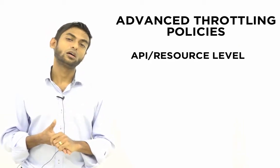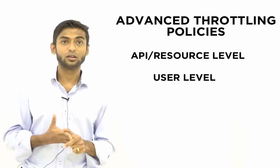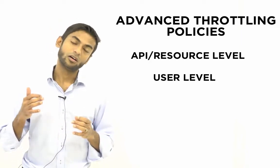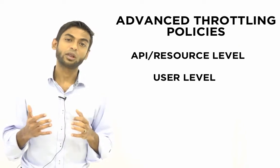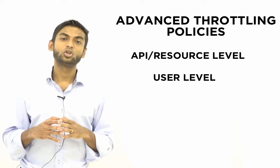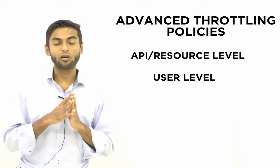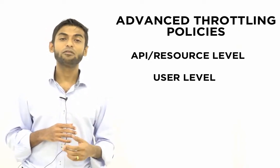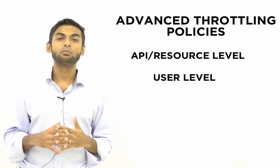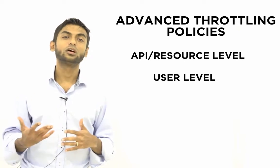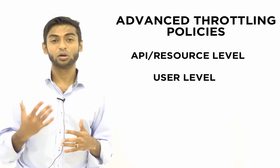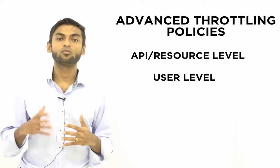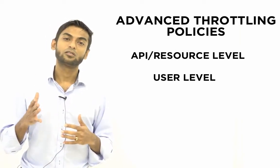You can also set the limit at user level. Instead of the throttling limit applying to all users globally, you can ensure that it gets set on a per-user basis. So if you set the user level to 10 requests per minute and you have three users, each of those users will be able to invoke the API at a rate of 10 requests per minute, making the total potential 30 requests per minute.